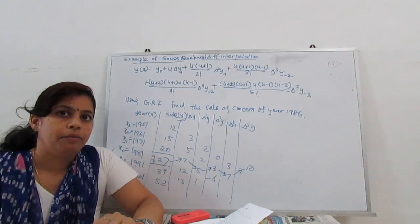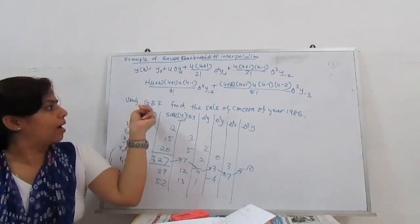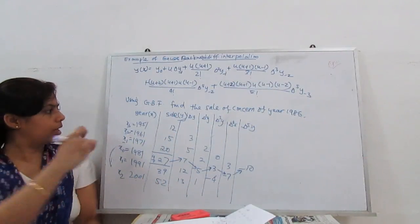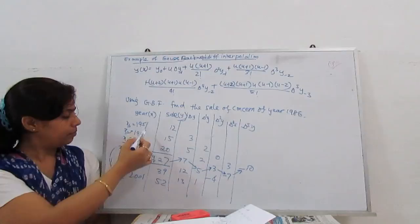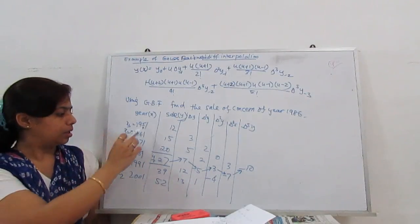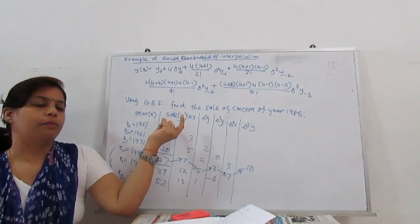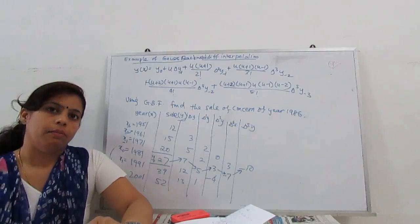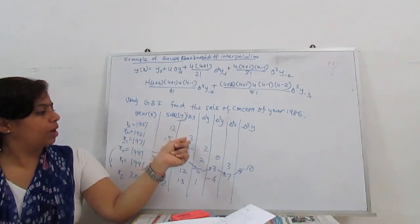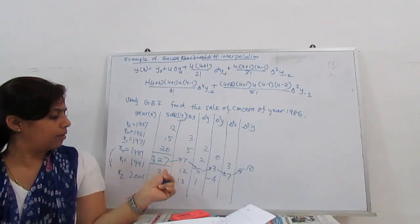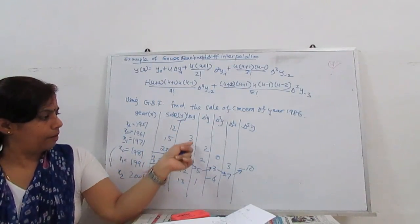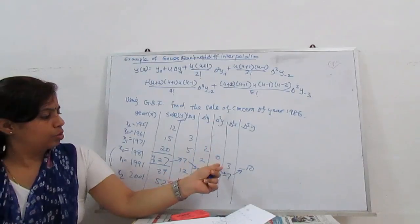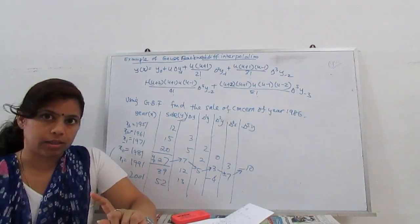Now we solve an example with the Gauss backward formula. Find the sales figure for the year 1986, given data: year 1951, 1961, 1971, 1981, 1991, 2001 with sales y = 12, 15, 20, 27, 39, 52. Building the difference table: first differences are 3, 5, 7, 12, 13; second differences are 2, 2, 5, 1; and so on for higher-order differences.